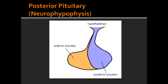Posterior Pituitary. What is another name of posterior pituitary? Another name of posterior pituitary is neurohypophysis.